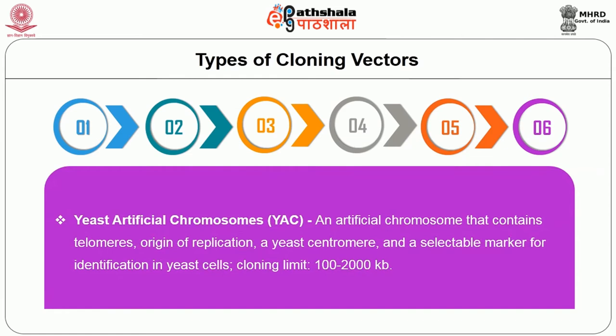Coming to yeast artificial chromosomes: it is an artificial chromosome that contains telomeres, an origin of replication, a yeast centromere, and a selectable marker for identification in yeast cells, with a cloning limit of 100 to 2000 kb.